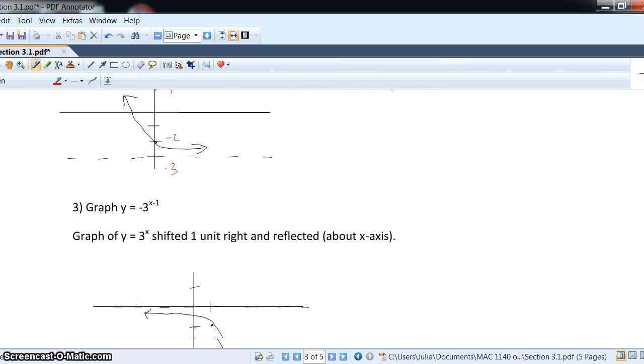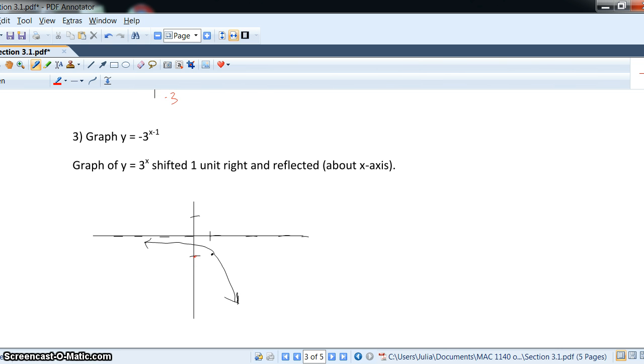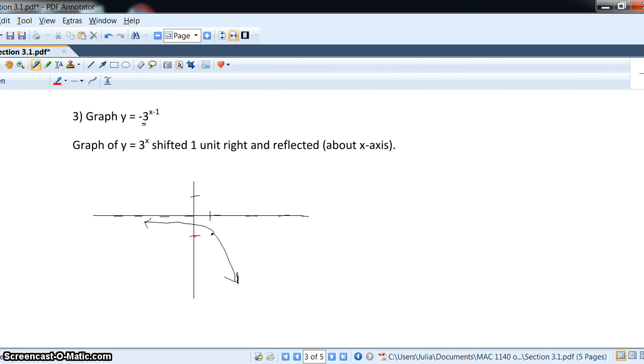Now, let's take a look. What if we have a reflection? What if we have y equals negative 3 to the power of x minus 1? So, here we have two things happening. We have a reflection, an upside-down version, and we have a shift left to the right, but because of the minus, it's actually 1 unit to the right.